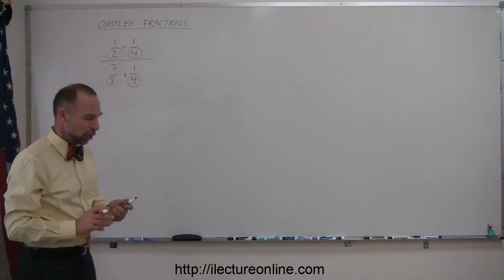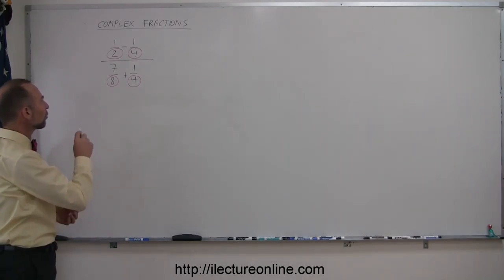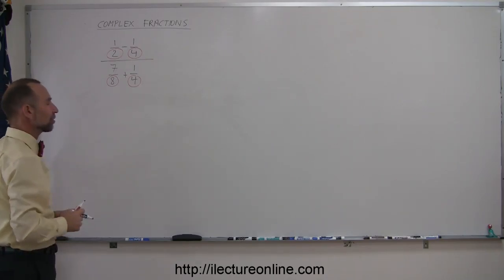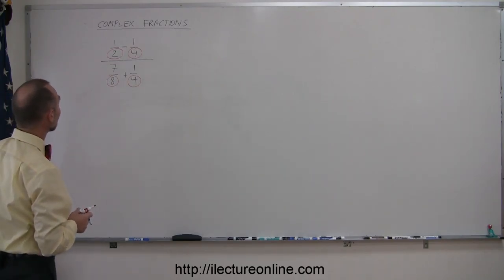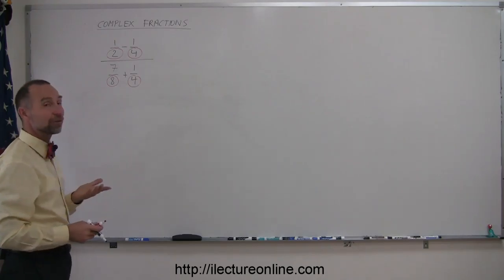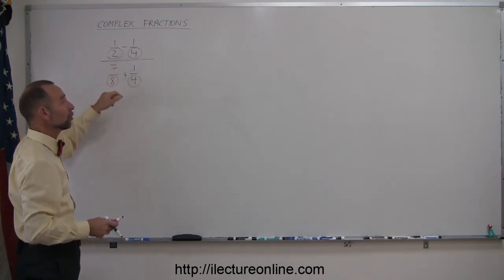So the trick that I like to use here is to find the lowest common denominator of all the denominators of all the fractions in this complex fraction. That's a mouthful, isn't it? But in other words, look at all the numbers that I circled, and what is the lowest common denominator? In this case, it looks like 8 is, because 4 fits into 8 evenly, and so does 2.